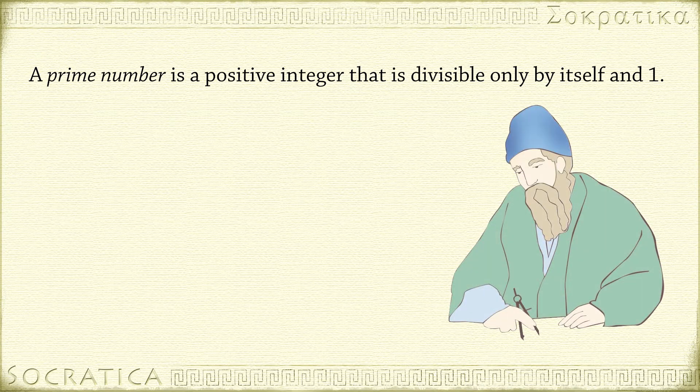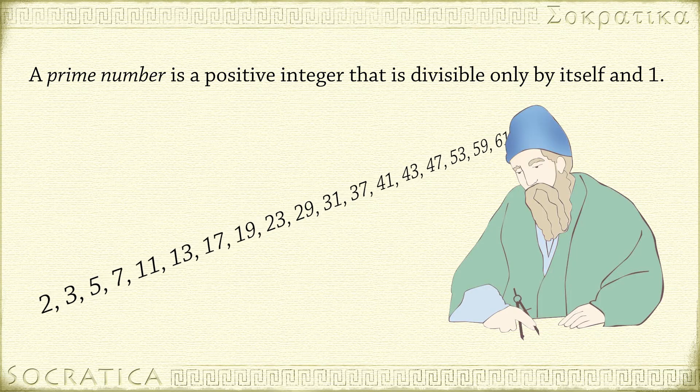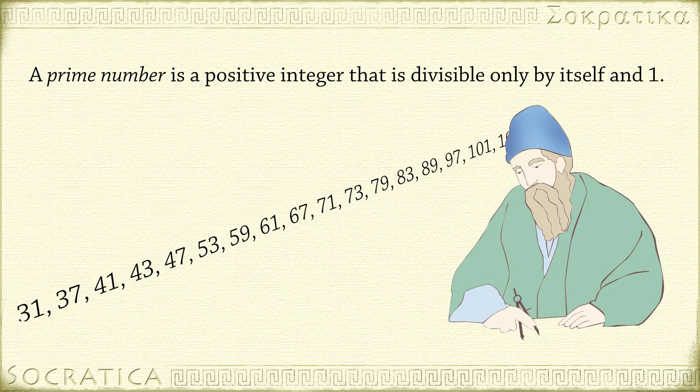Around 300 BC, Euclid proved there were an infinite number of prime numbers. But how frequently do prime numbers occur? How common are they?